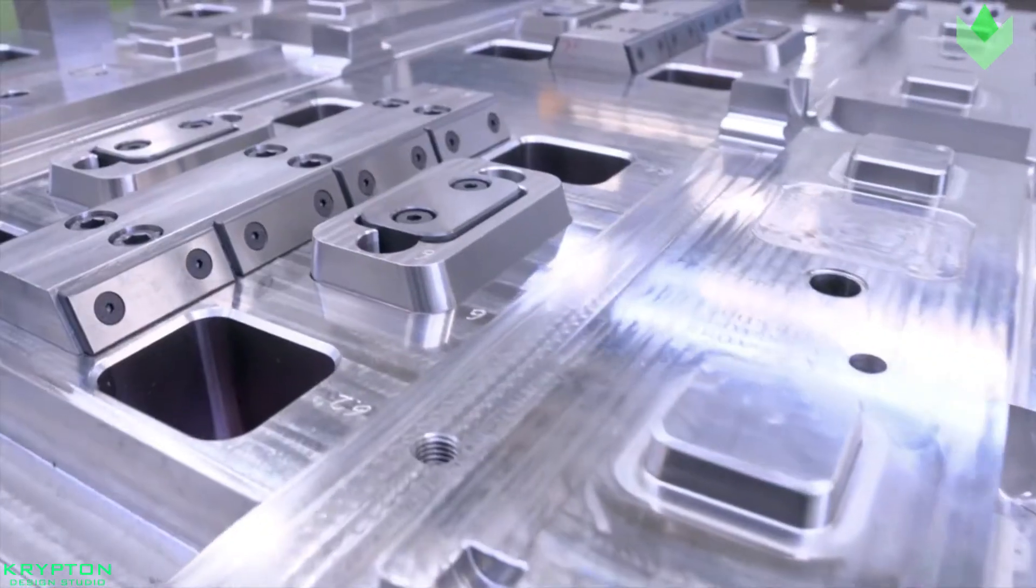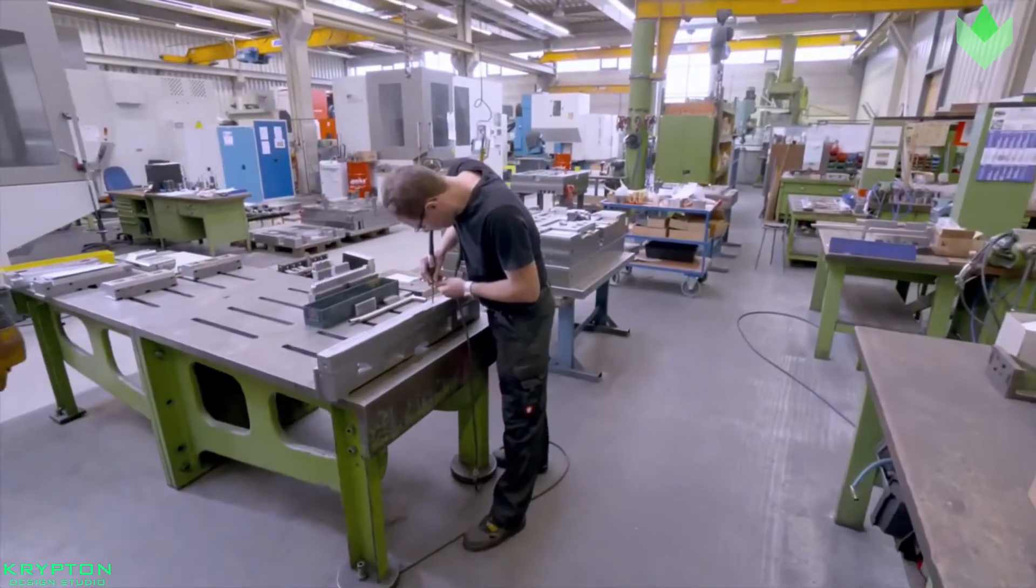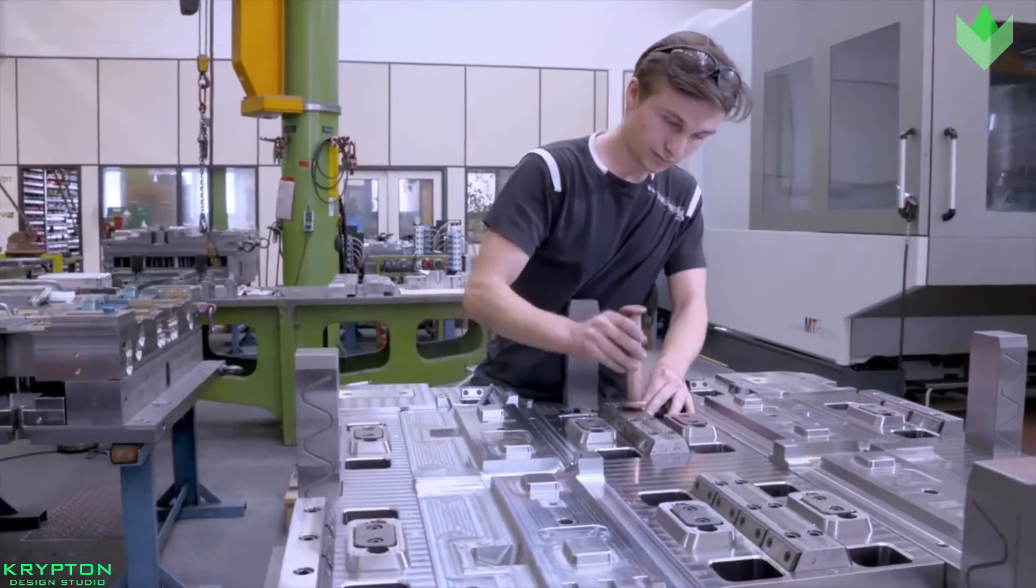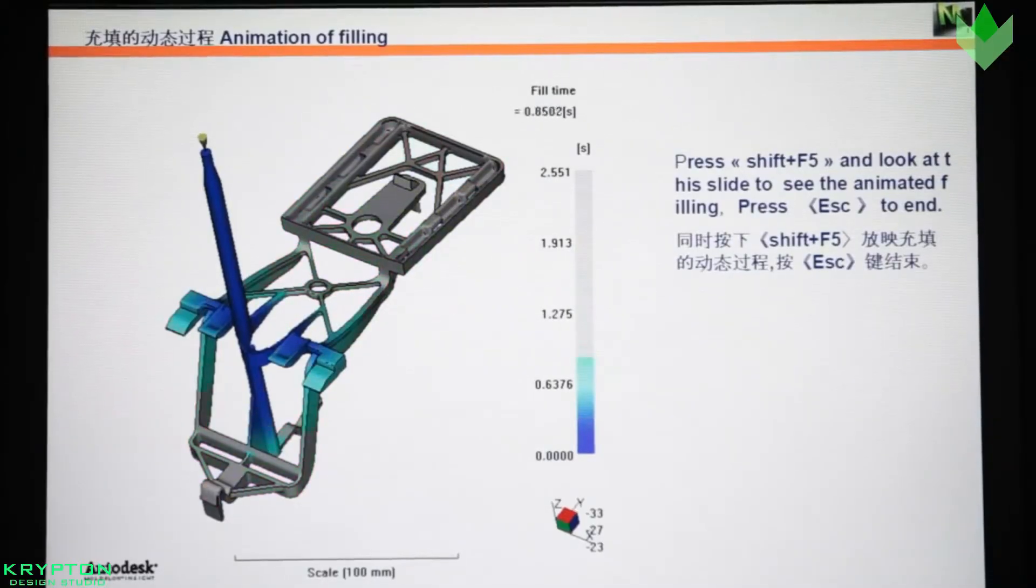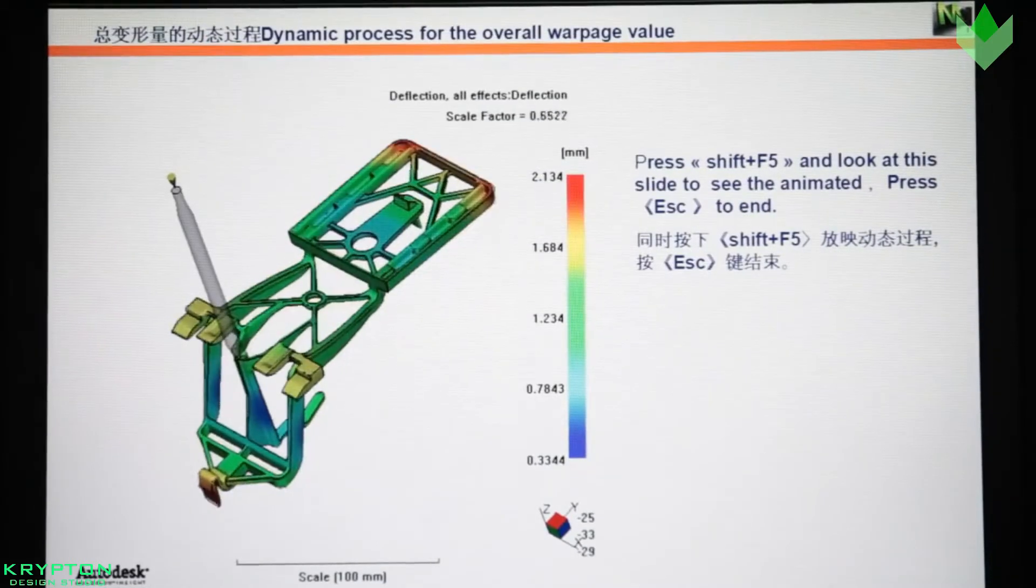Aluminum molds cost substantially less than steel molds, and when higher-grade aluminum such as QC7 and QC10 aircraft aluminum is used and machined with modern computerized equipment, they can be economical for molding hundreds of thousands of parts.